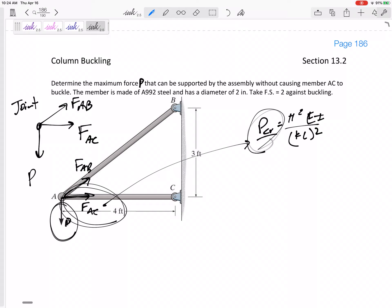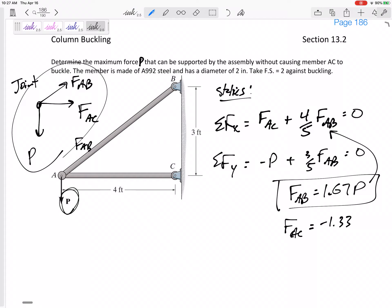Plug that back in up there. FAC would end up being, okay I've kind of messed up this process. Yeah, I'm tricking myself. Okay. FAC is 1.33 P. So FAB is 1.67 P.